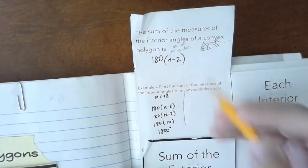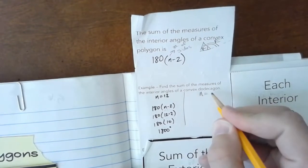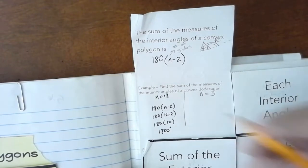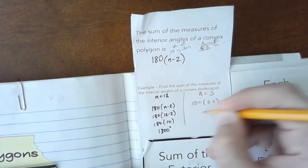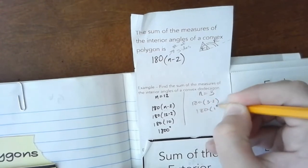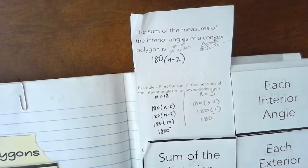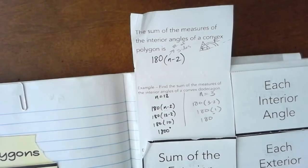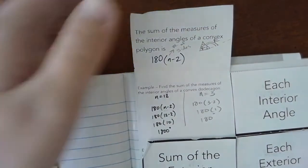We've already implicitly used this formula before. For a triangle, n equals 3, so we get 180 times (3 minus 2), which is 180 times 1, which equals 180 degrees. This confirms the Triangle Sum Theorem from unit five: all angles in any triangle must add up to 180 degrees. That's why the theorem works — it comes from this formula.